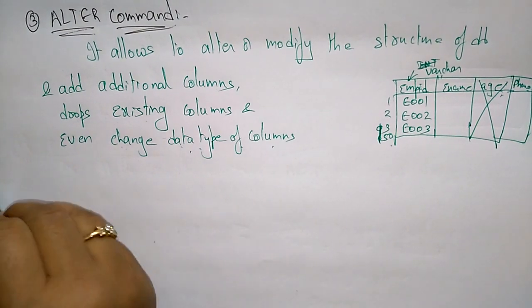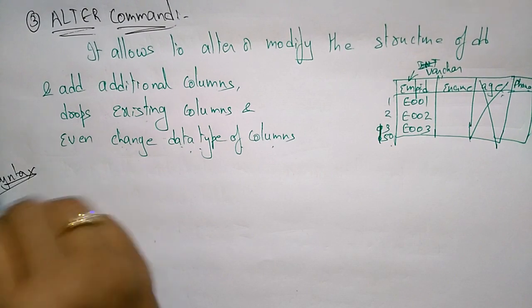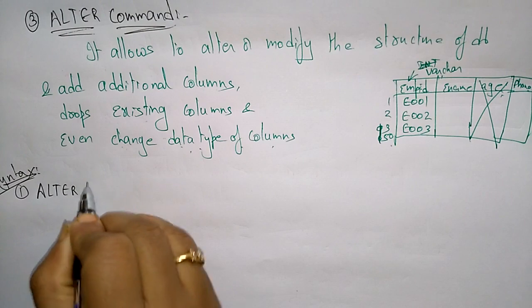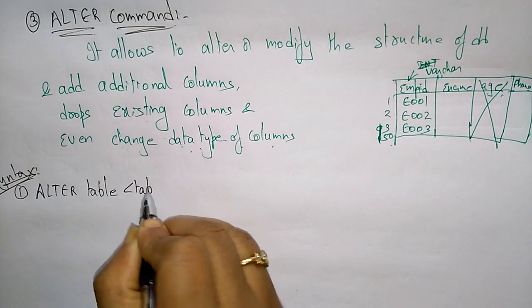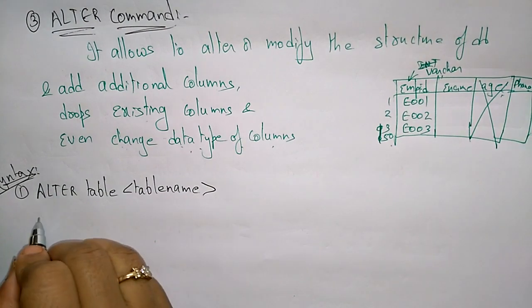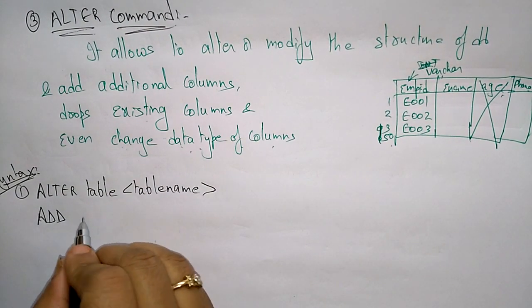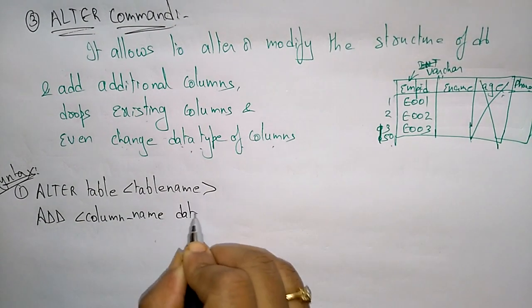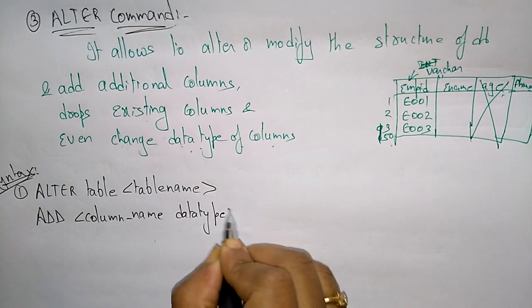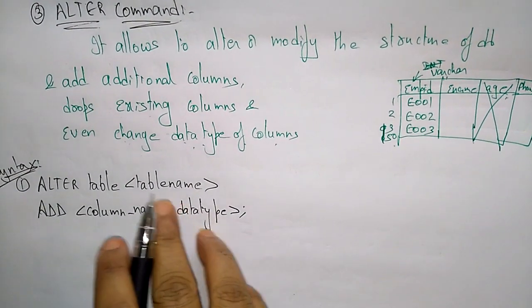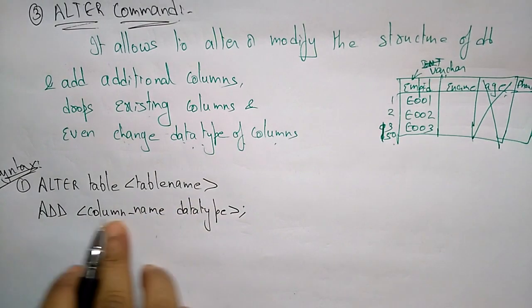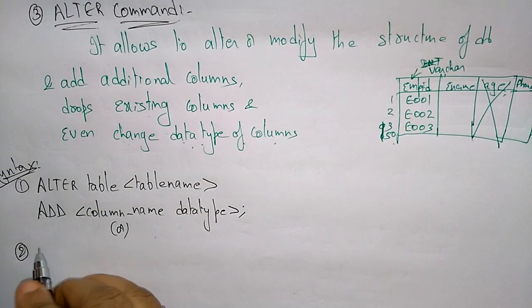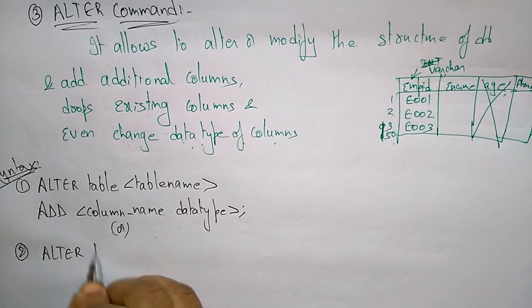Now let us see the syntax. First: ALTER TABLE table_name ADD column_name data_type. In this syntax, I am adding a column name to a particular table — adding the column name and the data type.